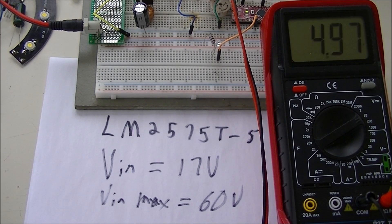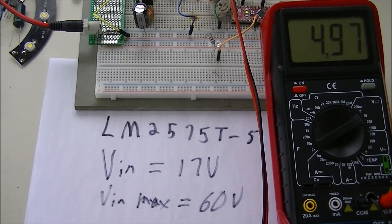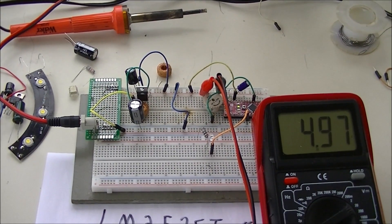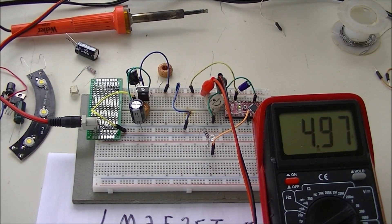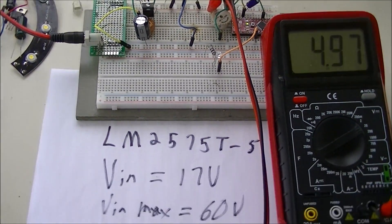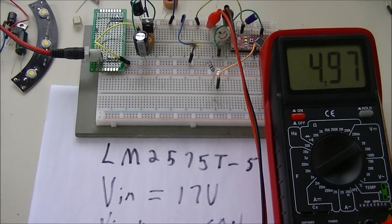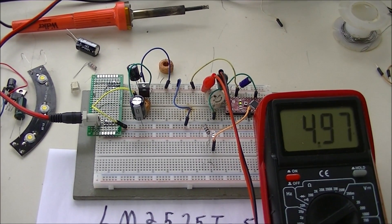In the case of this circuit, I have an input of 17 volts. As you can see on the meter, it's putting out about 5. You can put in up to 60 volts, I believe, on this particular part or related parts.